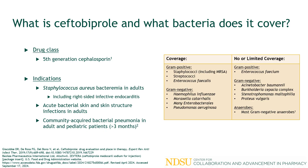The first question is: what is ceftobiprole and what bacteria does it cover? It's a fifth-generation cephalosporin that was approved in April 2024 in the U.S. for Staph aureus bacteremia and acute bacterial skin and skin structure infections in adults, as well as community-acquired bacterial pneumonia in adults and pediatrics. In other countries, it's generally approved for community and hospital-acquired pneumonia, but not ventilator-associated pneumonia.